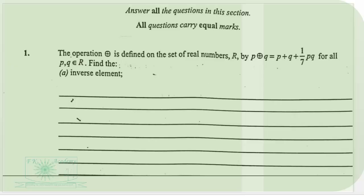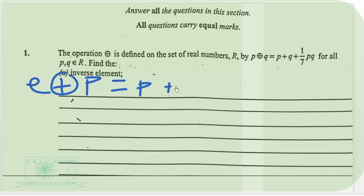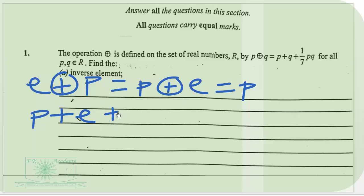To find the inverse element, first we need to get the identity element. Let E be the identity element, then E ⊕ P = P ⊕ E = P. By definition we know that P ⊕ Q = P + Q + (1/7)PQ, so we have P + E + (1/7)PE, and this should give us P.